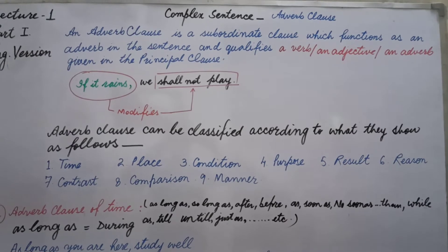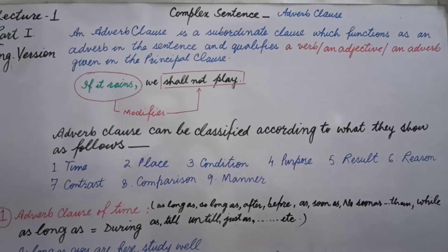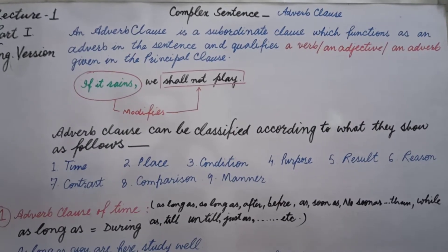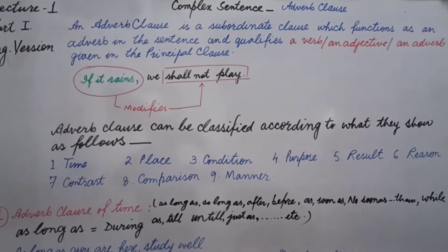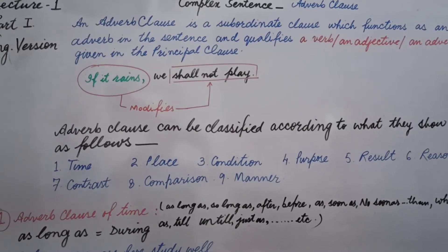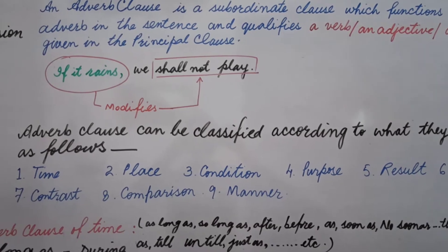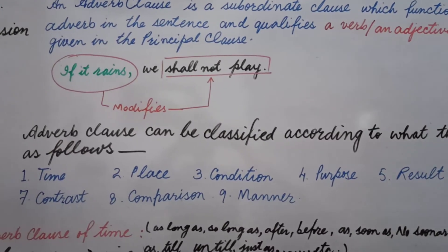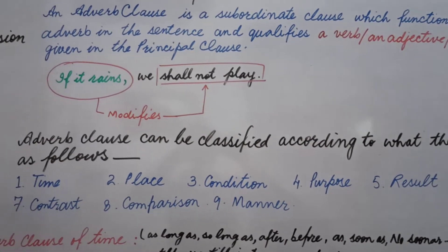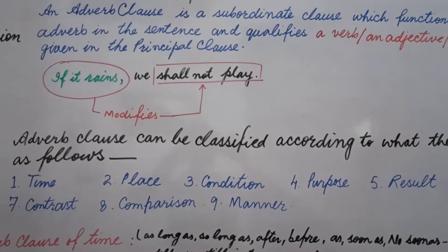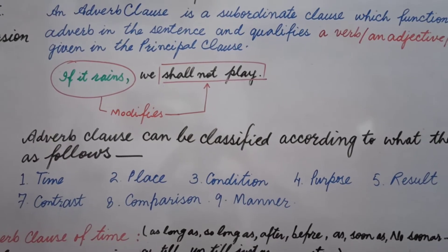Finally, we can define it as: an adverb clause is a subordinate clause which functions as an adverb in the sentence and qualifies a verb, an adjective, or an adverb given in the principal clause. Let's study this in an example. 'If it rains, we shall not play.' Here, 'if it rains' is the adverb clause and 'we shall not play' is the principal clause. 'If it rains' qualifies or modifies the verb 'shall not play,' so it is called an adverb clause.